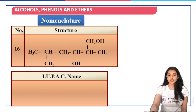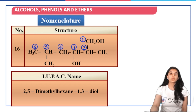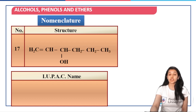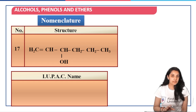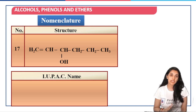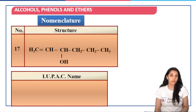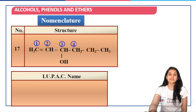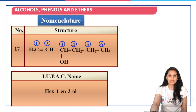Next structure: identify the longest parent chain, see the substituents, and name it — it would be 2,5-dimethylhexane-1,3-diol. Next structure: since there is a double bond present, we will give preference to the double bond and start numbering from that side, giving hex-1-en-3-ol. Since we are using a vowel in 'ol', we remove the vowel 'e' from 'ene' — two vowels will not come together.